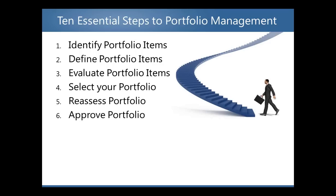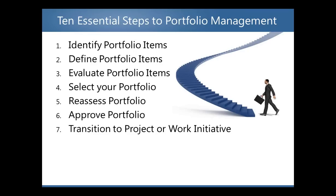Step six: approve the portfolio. Once the portfolio selection team has had time to reassess the portfolio based on further information, the approval process can begin. The approved items then go into an execution stage and are typically handed off to the project team for execution — though that may vary across organizations. Step seven: transition portfolio items to a project or work initiative. The approved items are then promoted to actual projects or work and moved to the execution phase. At this point, a project manager will typically be assigned.